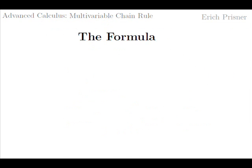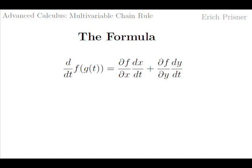The chain rule gives a formula for the derivative of this composed function. Its meaning is the rate of height gain over time when moving on the curve. According to the chain rule, this derivative can be expressed in terms of the partial derivatives of f with respect to x and y, and the derivatives of x and y with respect to t: the derivative of f∘g with respect to t equals the partial derivative of f with respect to x times dx/dt, plus the partial derivative of f with respect to y times dy/dt.